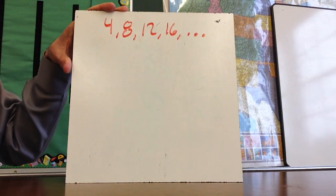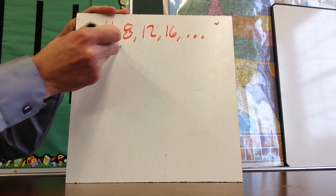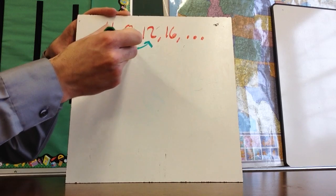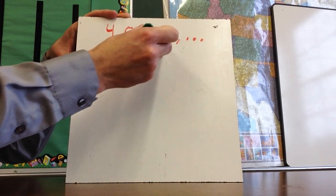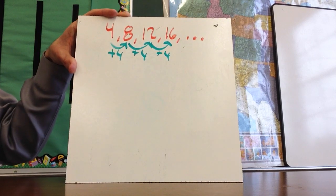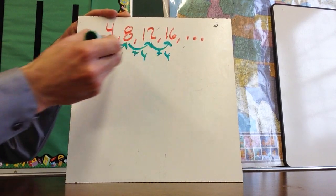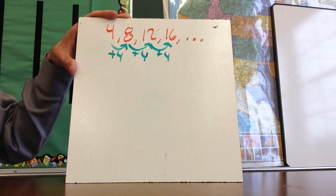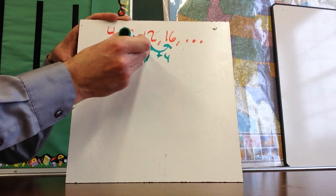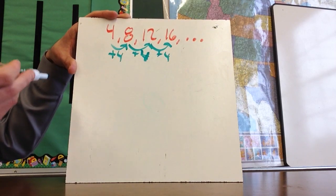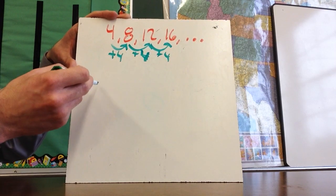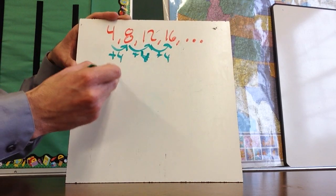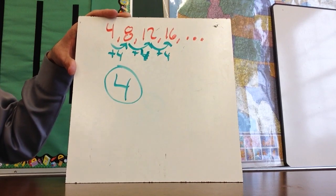At this point you could probably see what the pattern is. The pattern is it's increasing by four, or I am adding four to each term. So I take that first term and add four. And so this positive four, because I'm adding four—remember if it were going down I'd be subtracting so it would be a negative number—but because this is a positive four, the common difference is four.